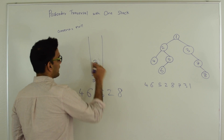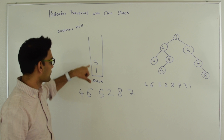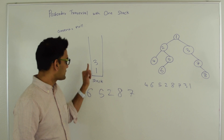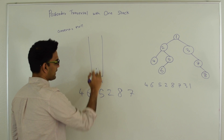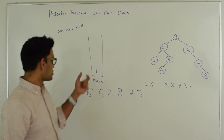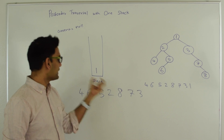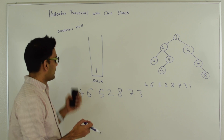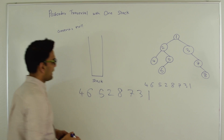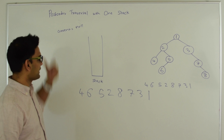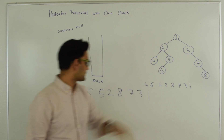Then we check: is 7 the right child of the top of the stack? The top of the stack is 3, and 7 is the right child of 3, which means 3 is also done visiting its left and right subtree. So we pop 3 out of the stack and visit it. At this point our stack is empty and current is null, so we break out of the while loop. This is our post-order traversal, which is exactly the same as before.